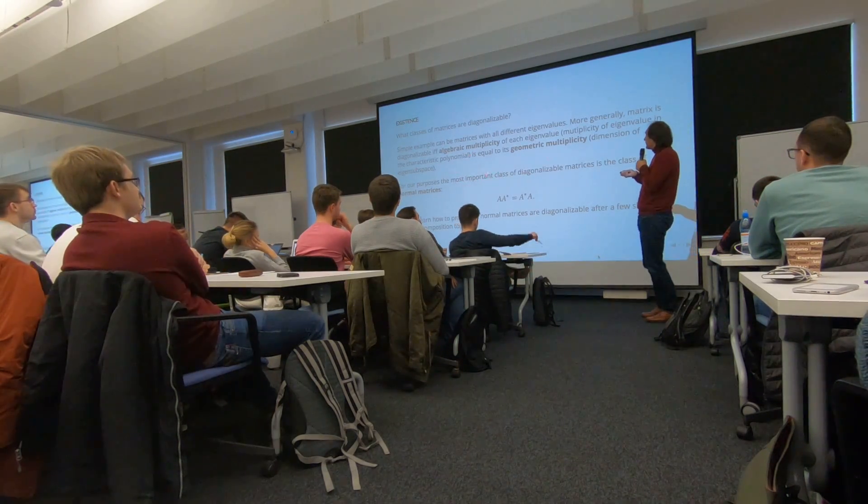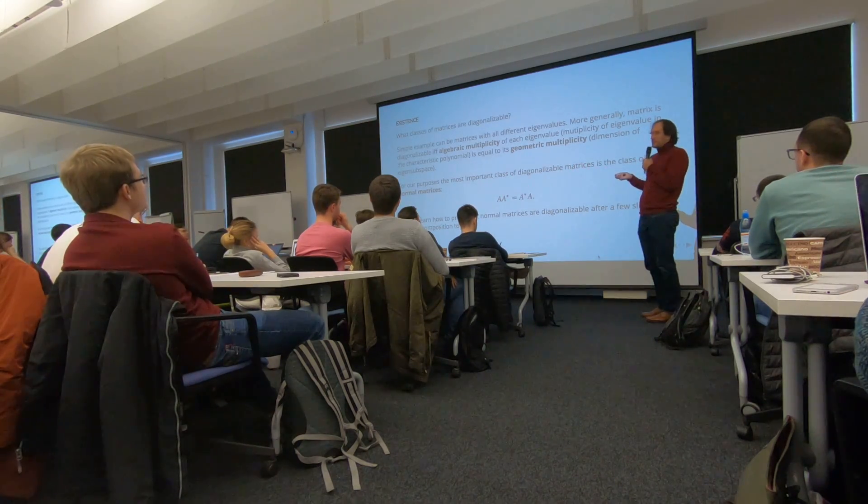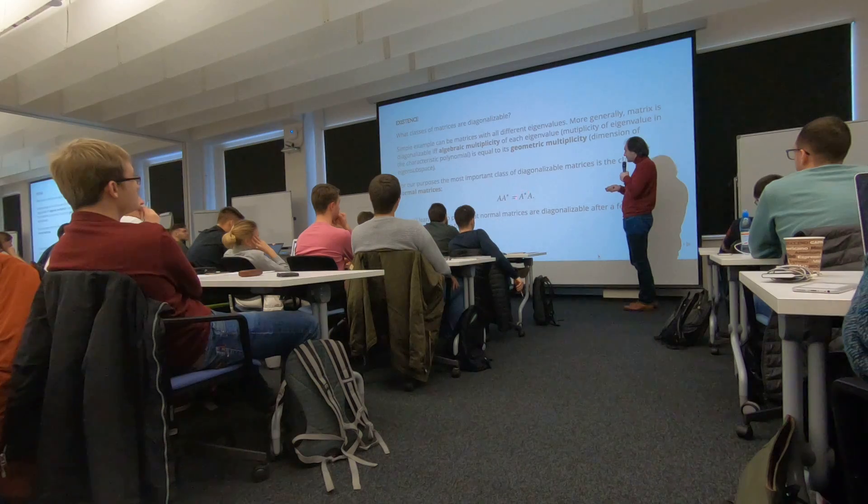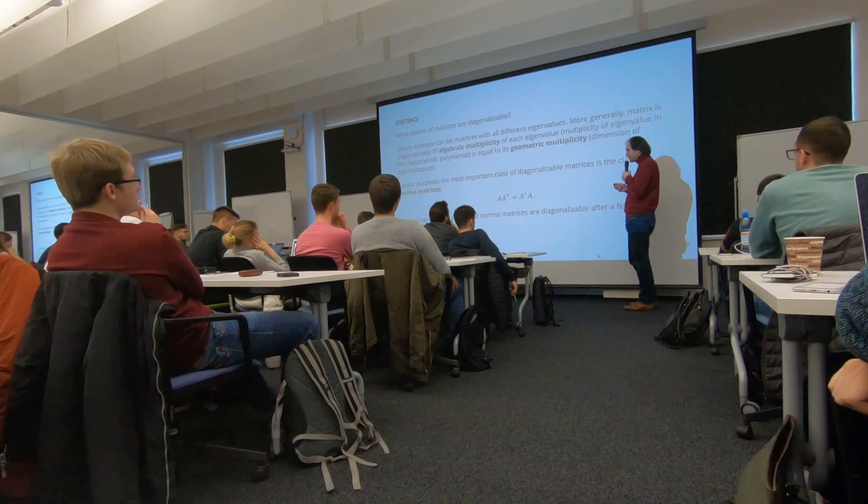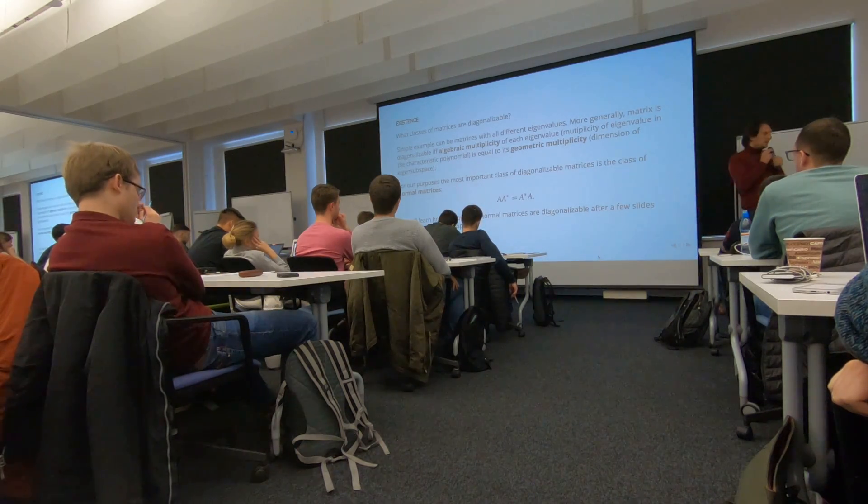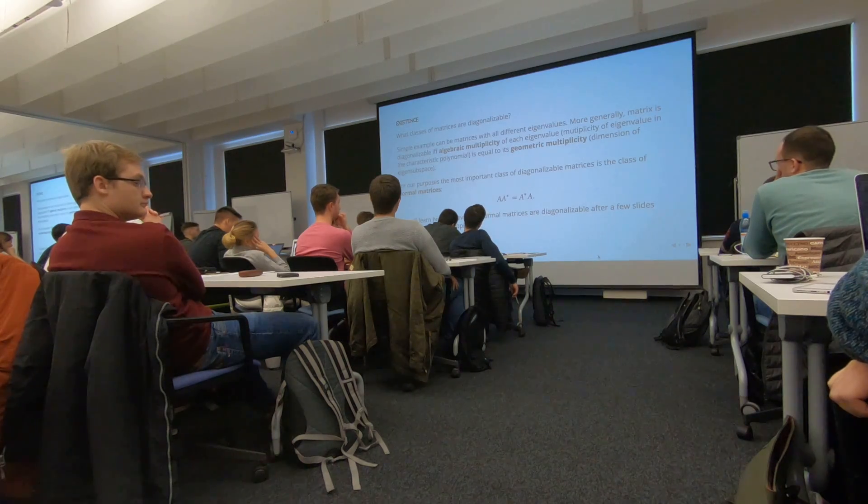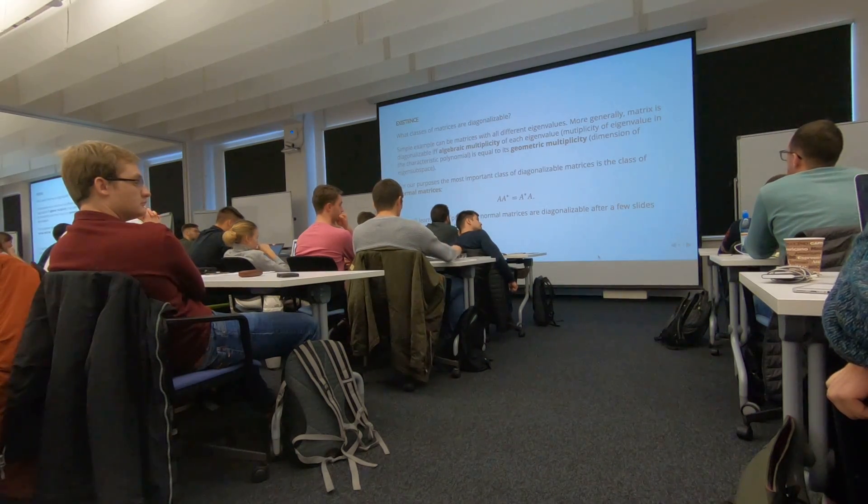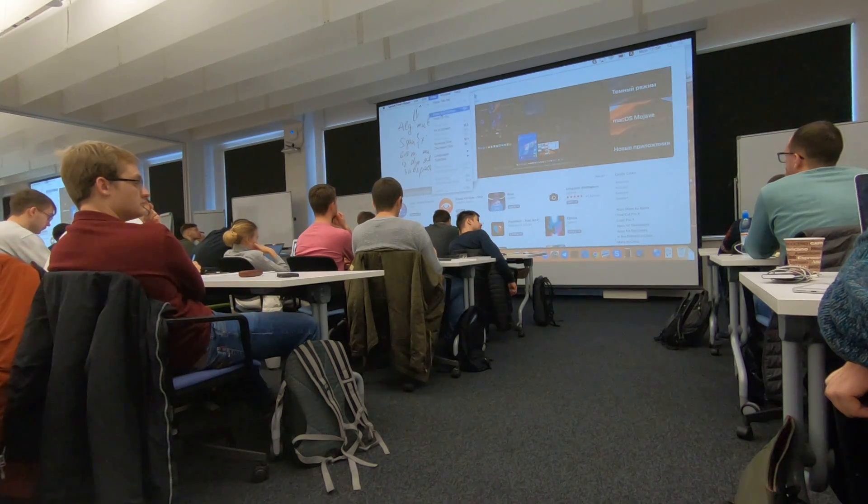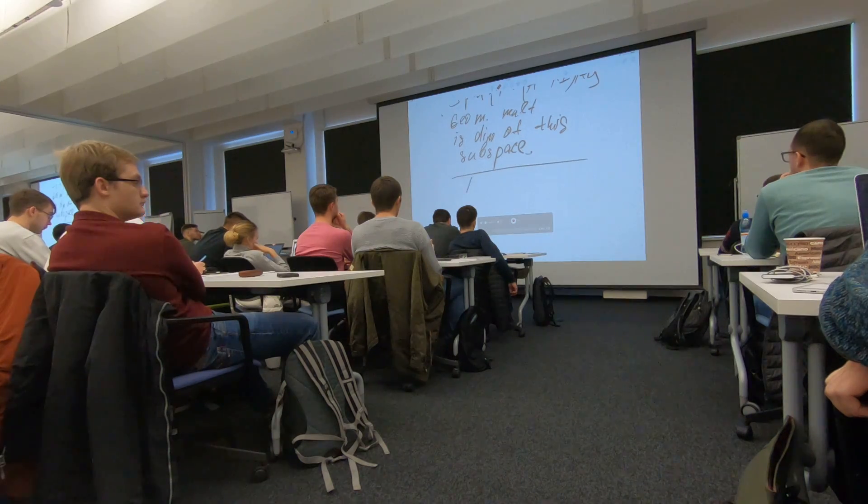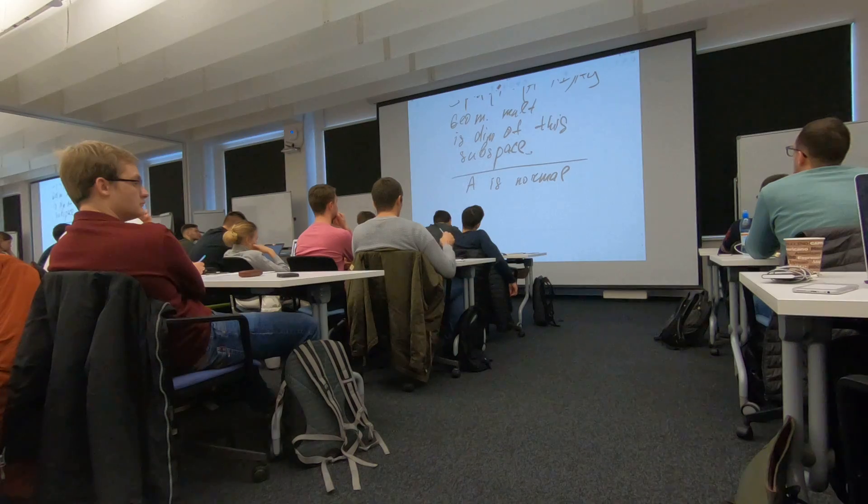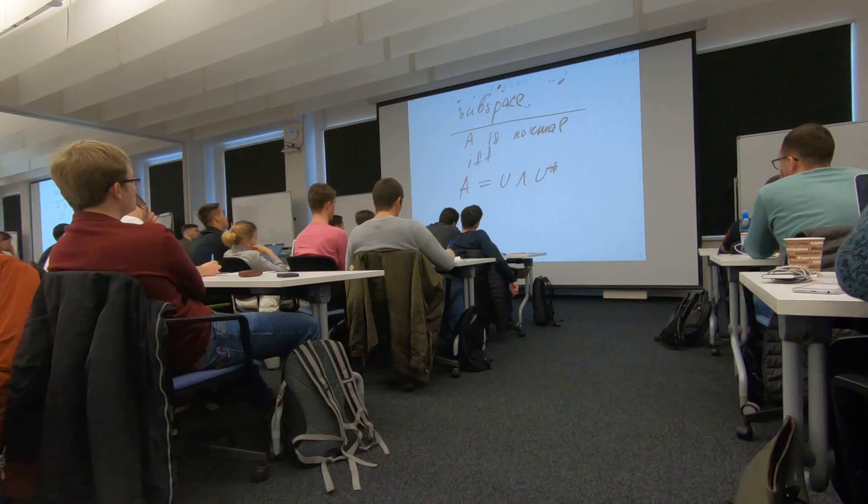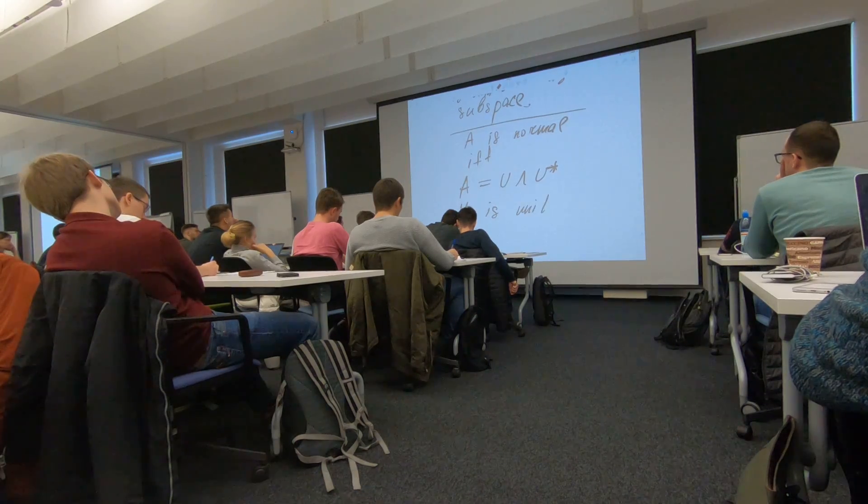The most important class of diagonalizable matrices is the class of so-called normal matrices. A normal matrix is called normal if it commutes with its Hermitian conjugate. And an important theorem that will be probably the final proof of today's lecture is that the class of normal matrices coincides: A is normal if A equals U lambda U star where U is unitary, and lambda is diagonal.